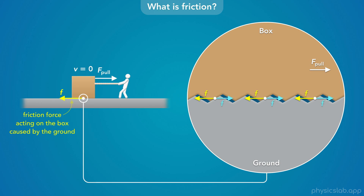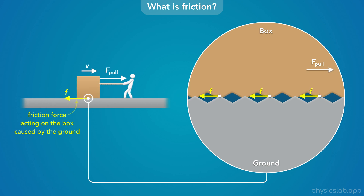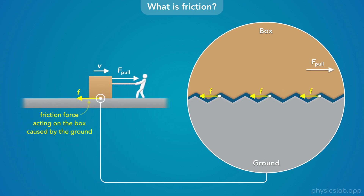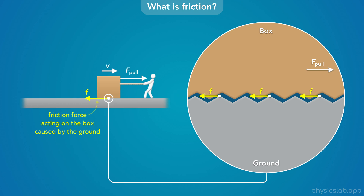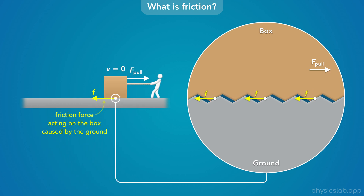The box also exerts equal and opposite forces on the ground, which add up to the friction force exerted on the ground by the box. If you pull hard enough to get the box to slide to the right, there is still a friction force on the box acting to the left as it rubs against the ground. So a friction force is caused by the microscopic roughness of each object or surface.